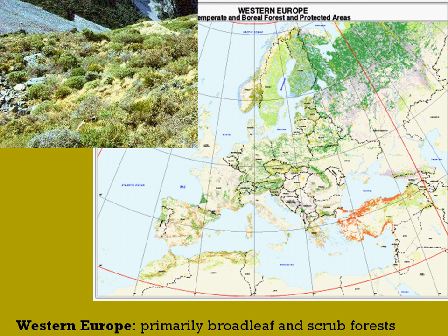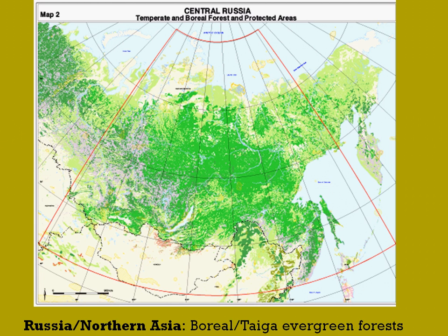In Russia and Northeastern Asia, as well as into Canada, you find the boreal forests, also known as the taiga forests. Those are your evergreen forests and represent the largest forested biome in the world.